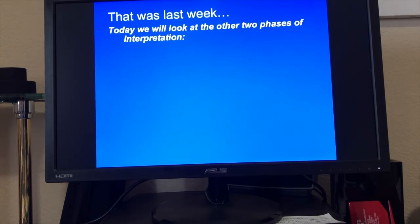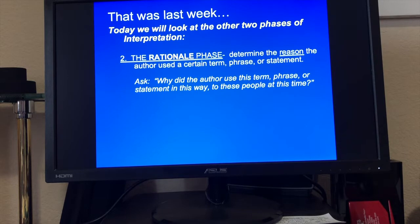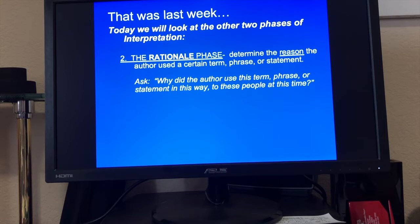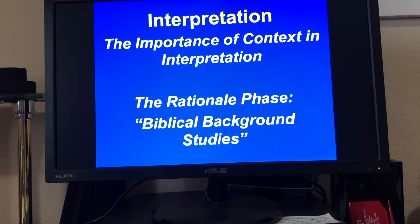Today we're going to look at the other two phases of interpretation. Number two, the rationale phase, where we determine the reason that the author used a certain term, phrase, or statement, asking: why did the author use this term, phrase, or statement in this way to these people at this time? And then finally, the implication phase, where we determine what is the author's intended point — what's the significant point, idea, or truth the author is expressing to his audience — asking: so what? What does it say about God, about man, about life, about me?